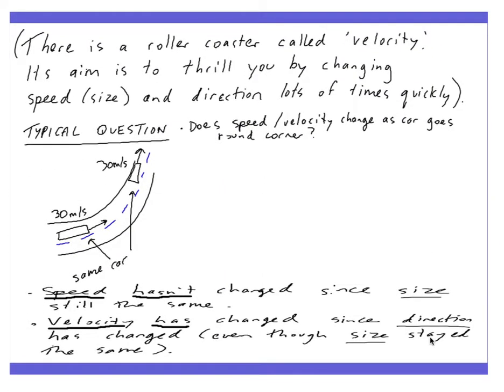Now here's a typical exam question. So imagine there's this roller coaster, and it's called velocity. Its aim is to thrill you by changing the speed, so the size that you're going, the speed that you're going, and the direction lots of times. So here's the question. Does the speed or velocity change as the car goes round the corner? And they've gave you this picture. So there's the car. It's 30 metres per second before it gets to the corner, and it's 30 metres per second after it gets to the corner.